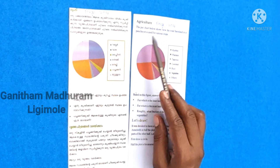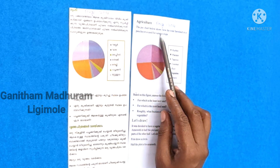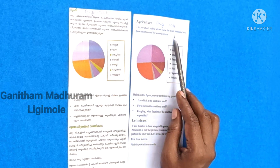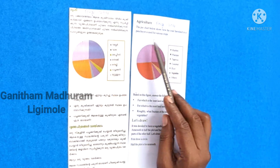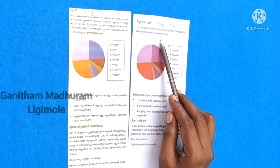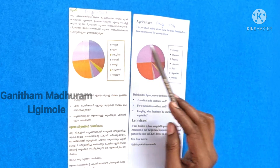Agriculture. The pie chart below shows how the total farmland in a panchayat is used for various crops.